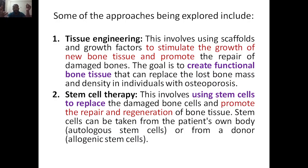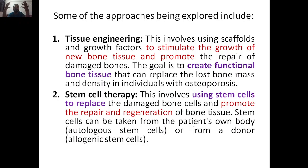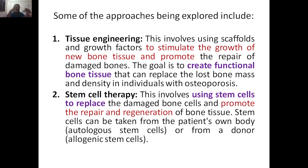Tissue engineering involves creating a scaffold. Along with the scaffold, you need growth factors, and you need to have cells. So you have the tissue scaffold, you seed the cells onto it, then add the growth factors. The bone cells will then start attaching to the scaffold, proliferating and dividing, and finally forming new bone tissue, promoting the repair of damaged bones. The goal is to create functional bone tissue that can replace the lost bone mass and density in individuals with osteoporosis — using scaffold and growth factors to stimulate growth of new bone cells.